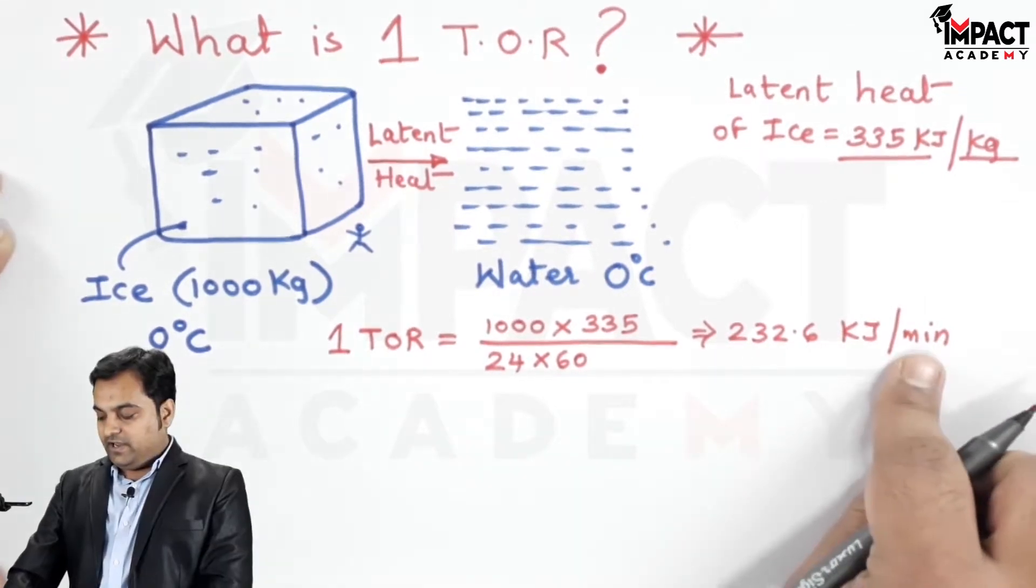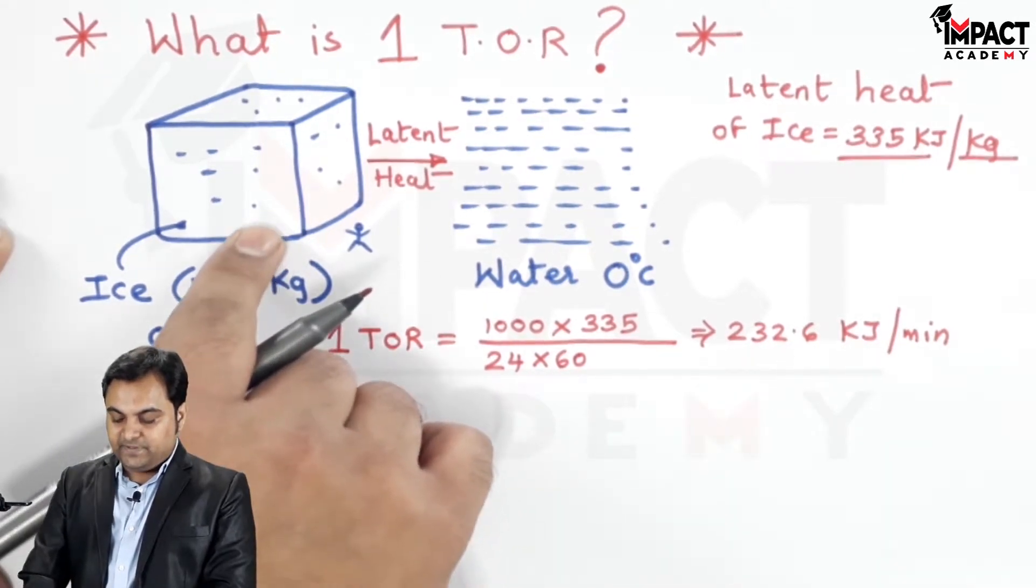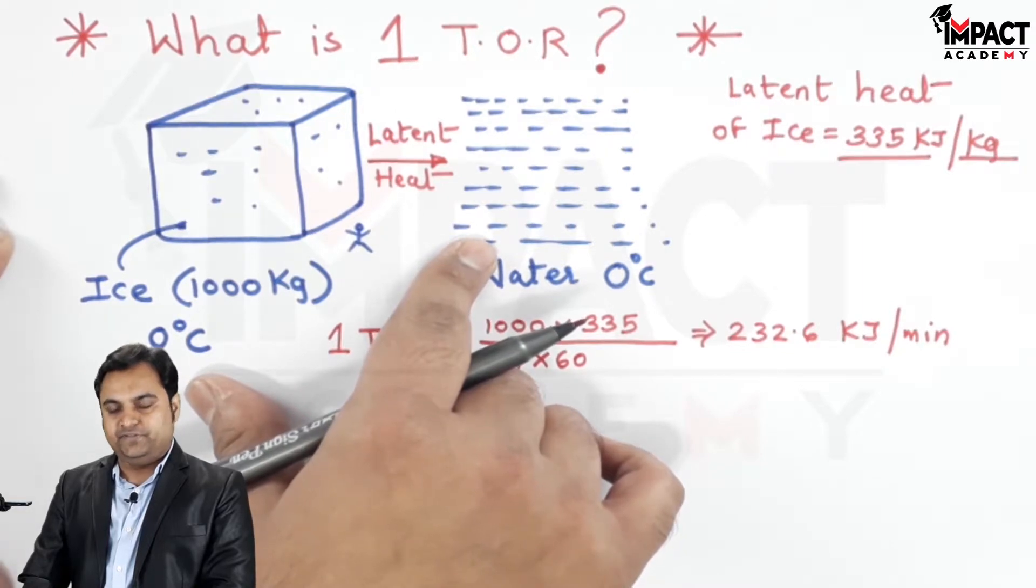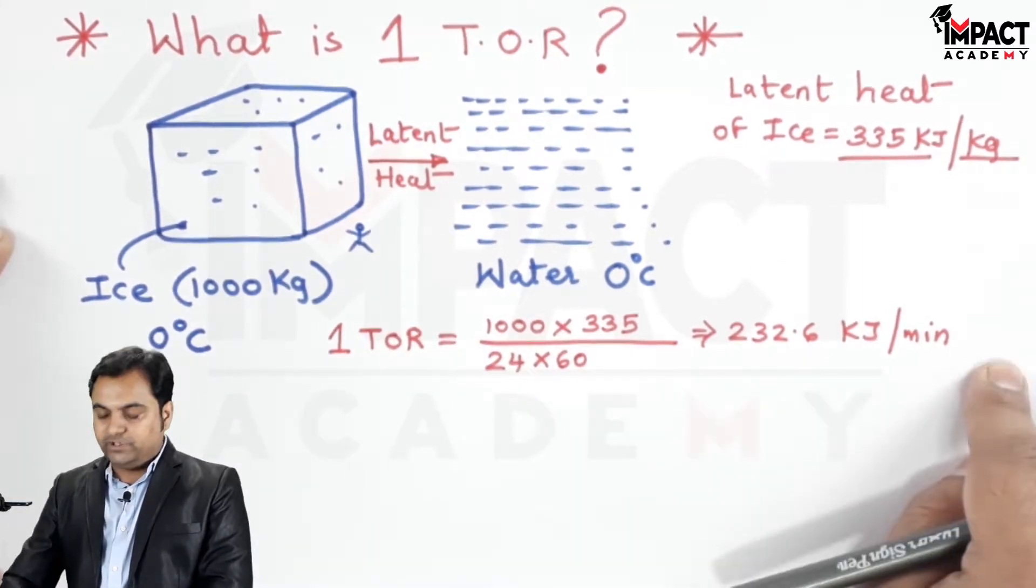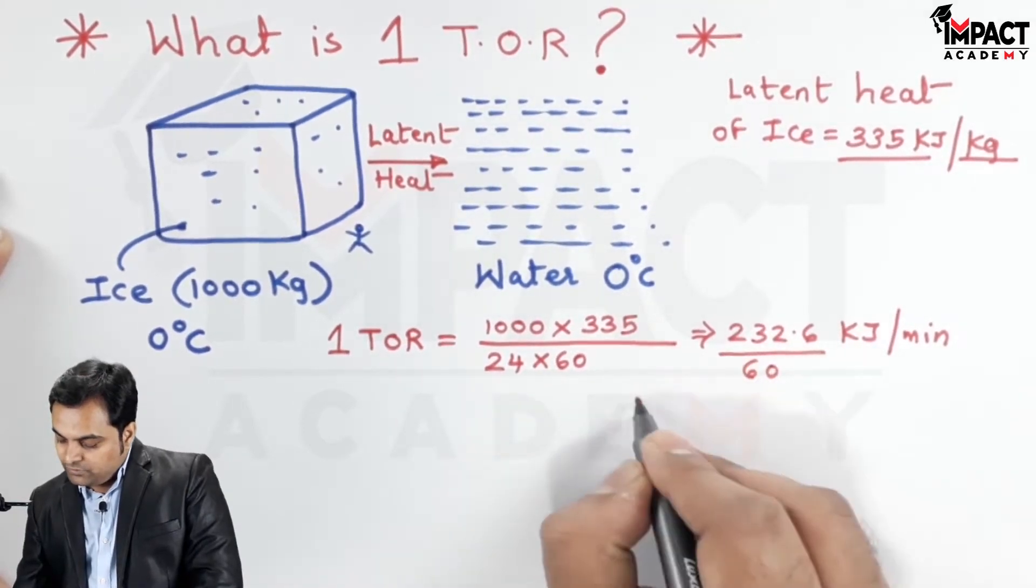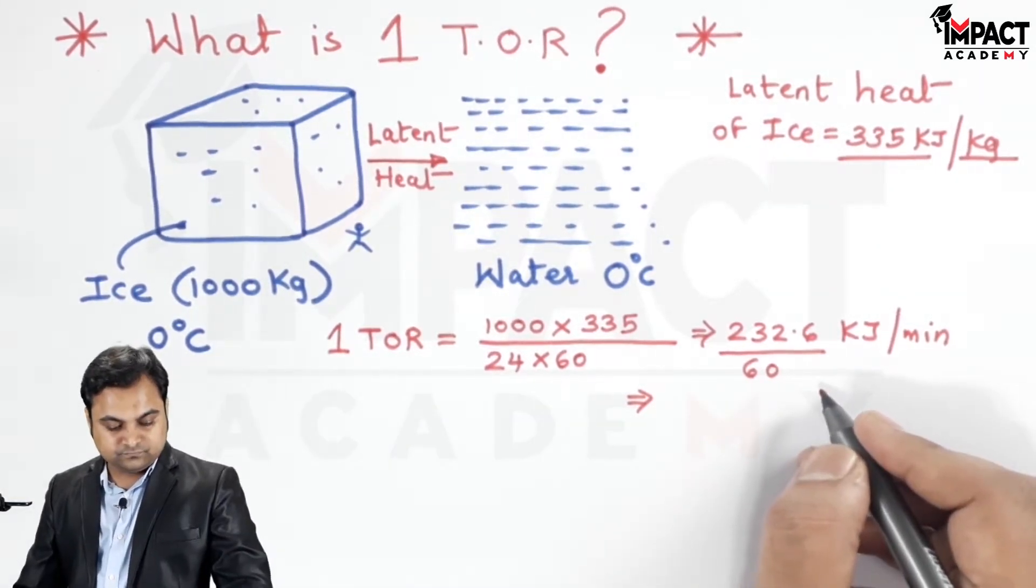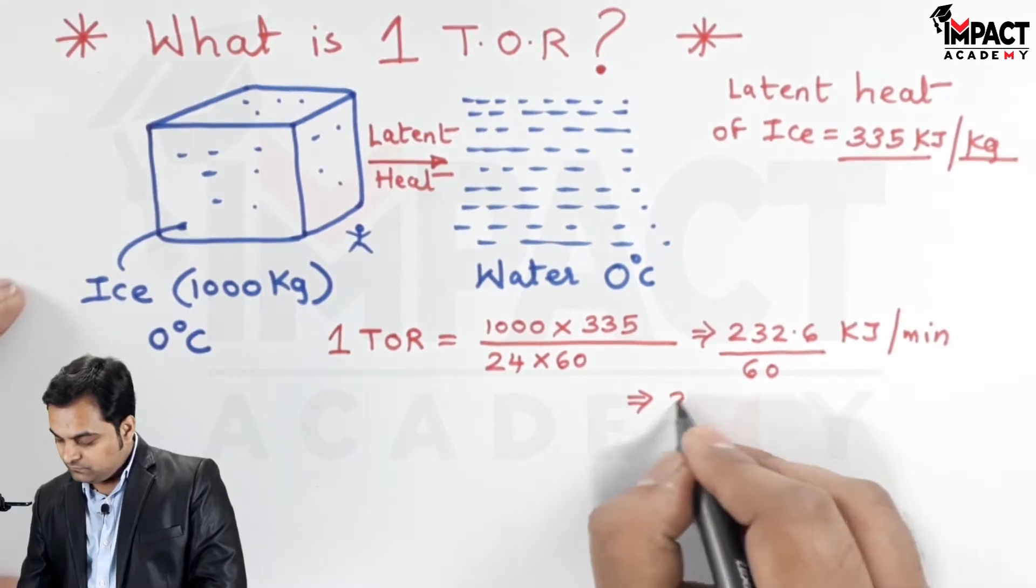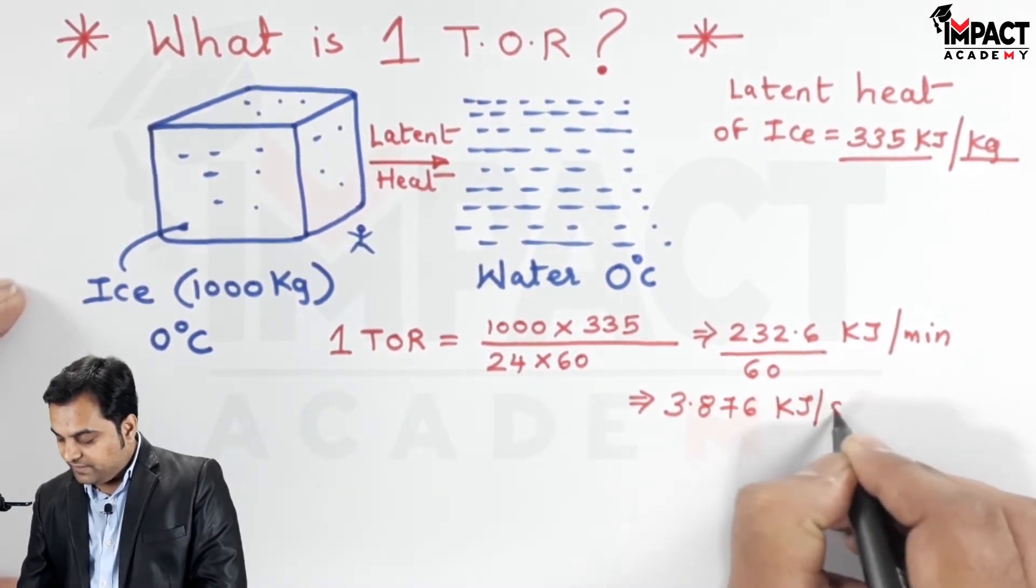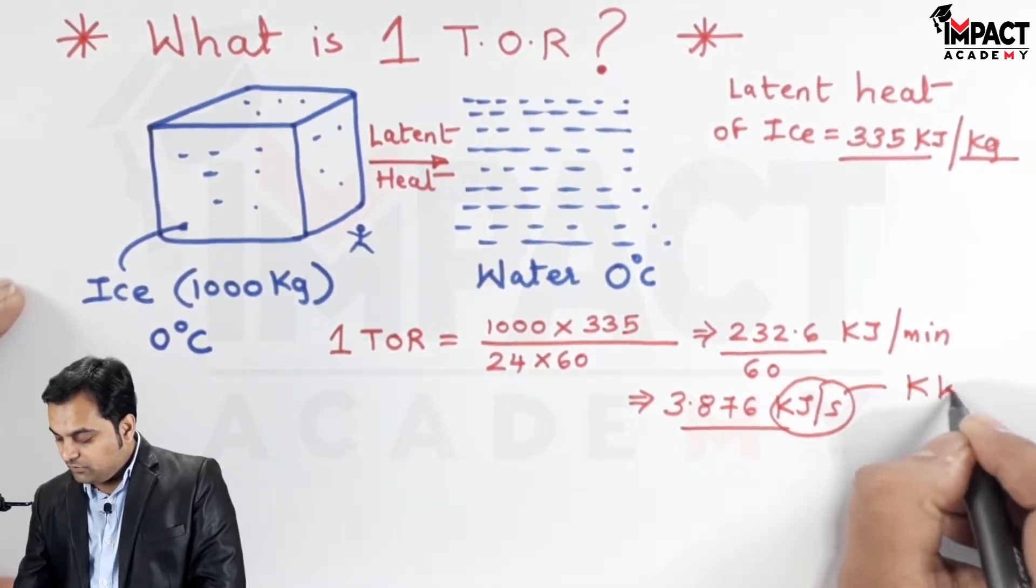It means in one minute, 232.6 kilojoules of heat is being given to the ice so that it melts and becomes water at 0 degrees Celsius. To convert it into per second, I would divide this by 60, so that gives the answer as 3.876 kilojoules per second, and kilojoules per second is also called kilowatts.